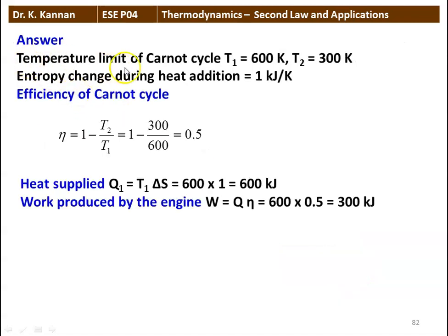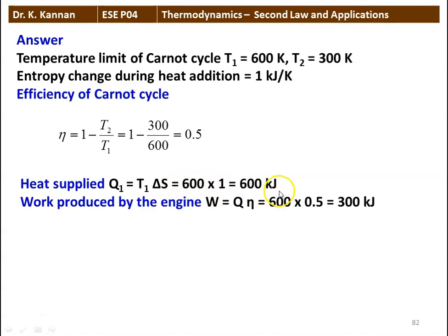The temperature limits of the Carnot cycle: T1 = 600 Kelvin, T2 = 300 Kelvin. Entropy change during heat addition: ΔS = 1 kJ/K. Efficiency of the Carnot cycle: η = 1 − T2/T1 = 1 − 300/600 = 0.5. Heat supplied: Q1 = T1 × ΔS = 600 × 1 = 600 kJ. Work produced by the engine: W = Q1 × η = 600 × 0.5 = 300 kilojoules. That is the answer.